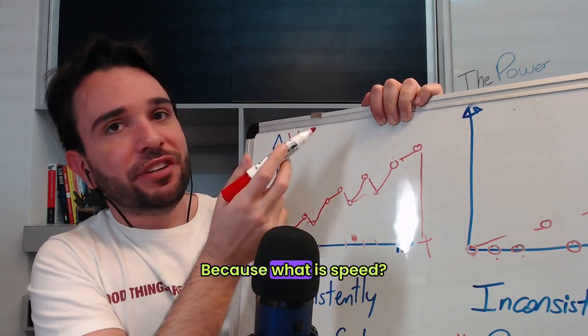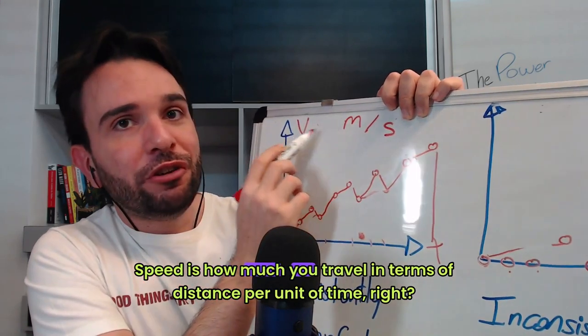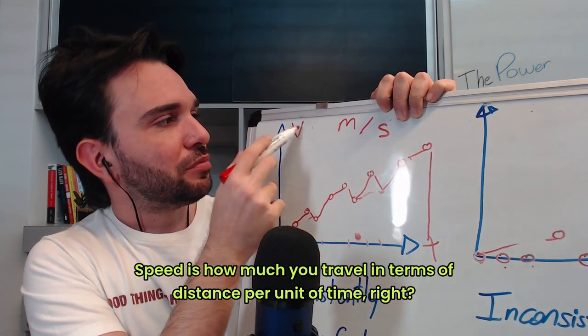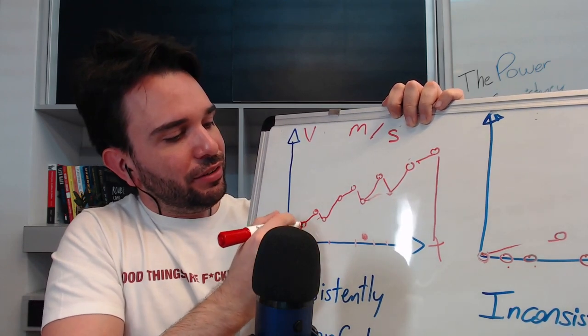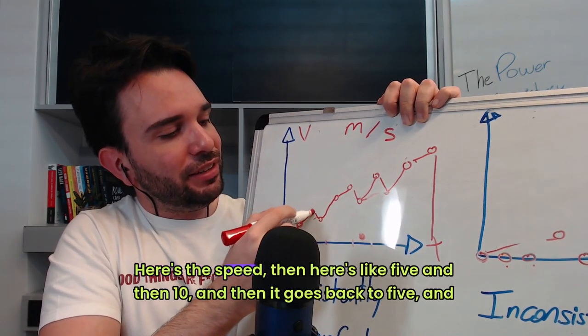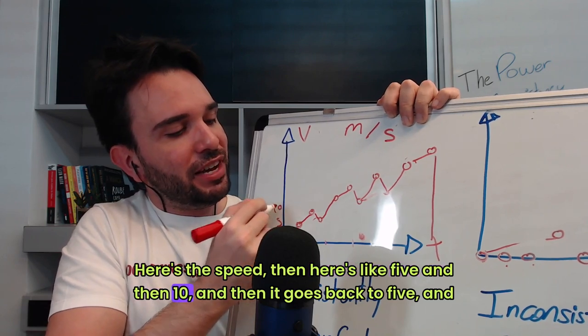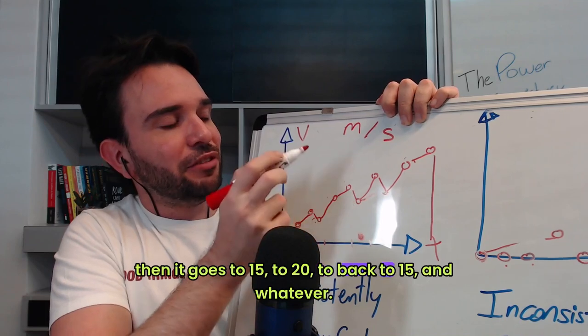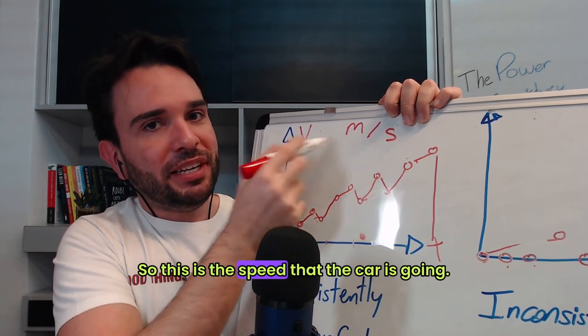Because what is speed? Speed is how much you travel in terms of distance per unit of time, right? So here's the speed, then like here's like five, and then ten, and then it goes back to five, and then it goes to 15, to 20, to back to 15, and whatever. So this is the speed that the car is going.